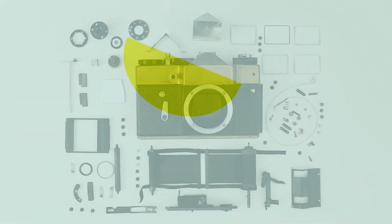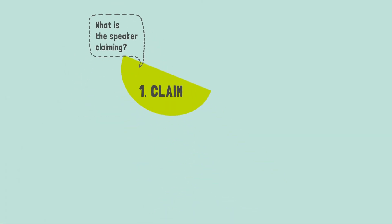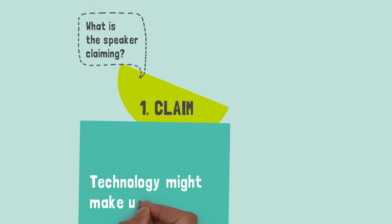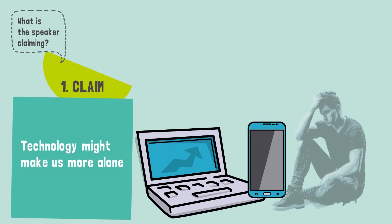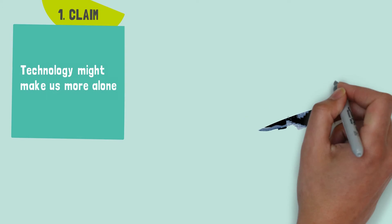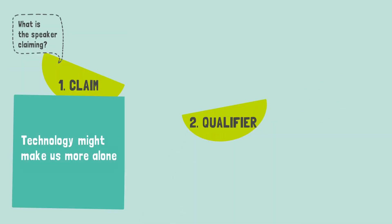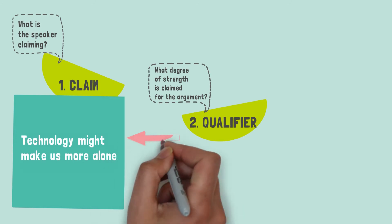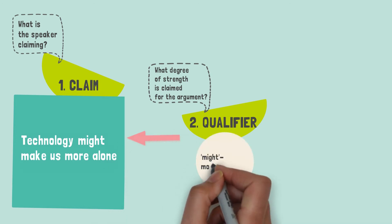Toulmin set about to create a template to use when building reliable arguments. For an argument to be considered good, it has to be formed of six components. Here is an example: I'm arguing that technology might make us more alone. This is the claim. The word 'might' used in the claim suggests a moderate degree of probability — this is called a qualifier.